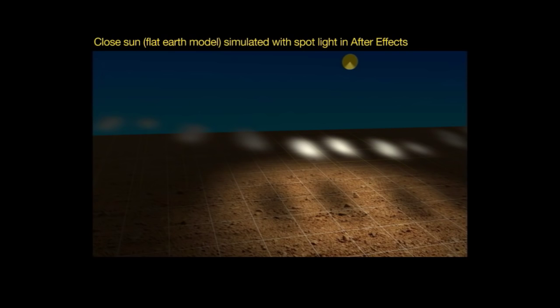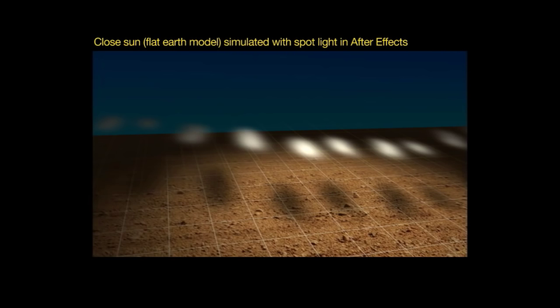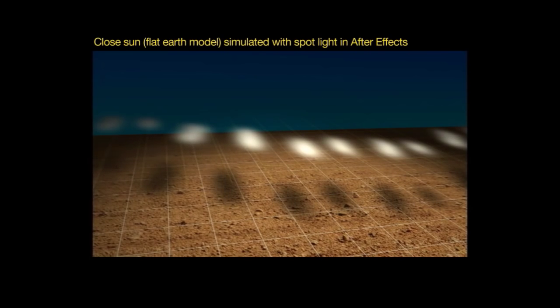Watch what happens as I slowly raise it. As you can see, when the Sun gets higher, the shadows of the clouds seem to slowly converge. So let's see what happens when I switch the light to one that's more like the Sun as it's been explained to us.